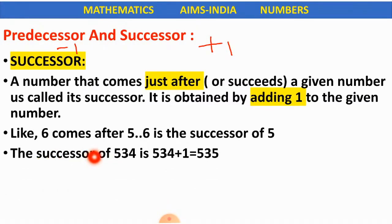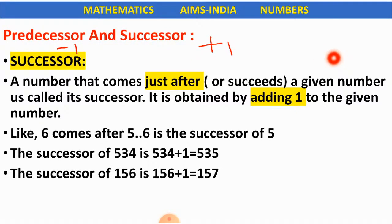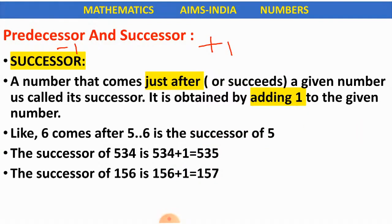Find the successor of 534. We find the successor by adding 1 to the given number. So successor of 534 is 534 plus 1, which equals 535. The successor of 156 is 156 plus 1, which equals 157.